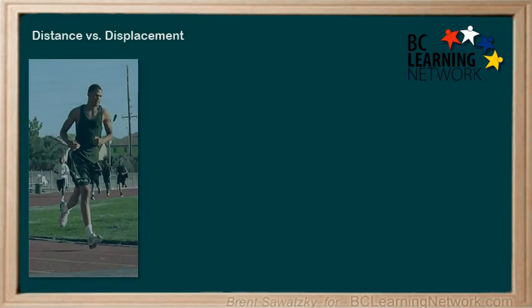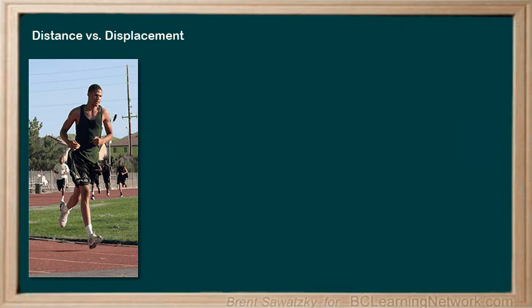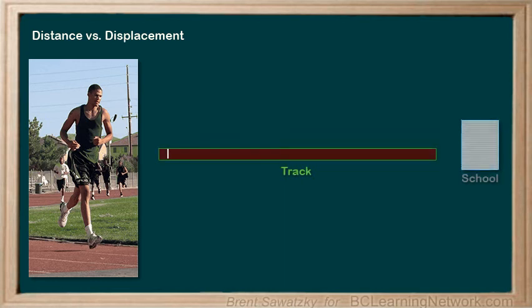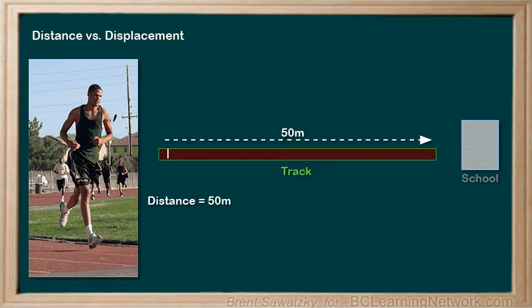Let's do another example involving displacement, this time using a different method of indicating direction. Dylan stands on a running track. If he runs 50 meters down the track, his distance is obviously 50 meters. No direction needed for a scalar quantity like distance, so simply 50 meters.